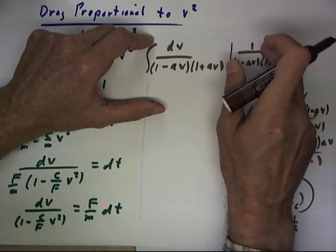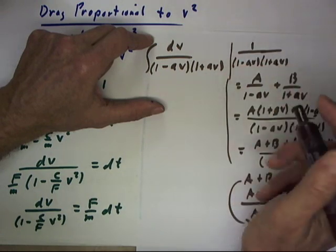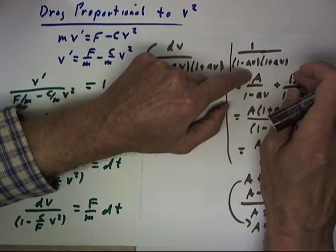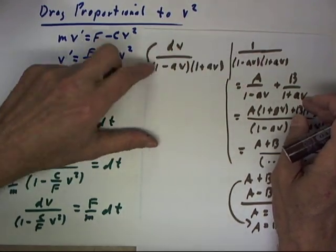As we know from partial fractions, 1 over this quantity is going to be broken into A over the first binomial plus B over the second binomial.